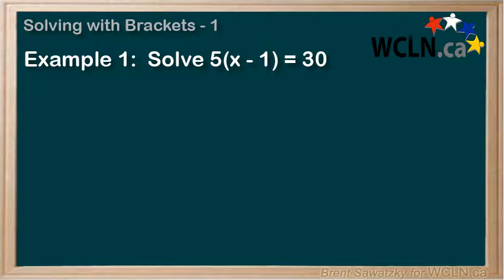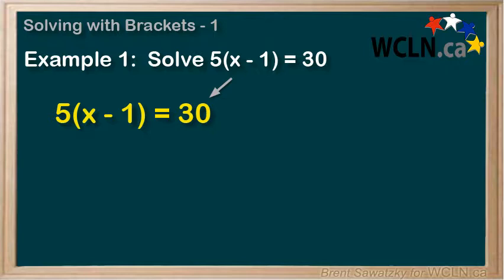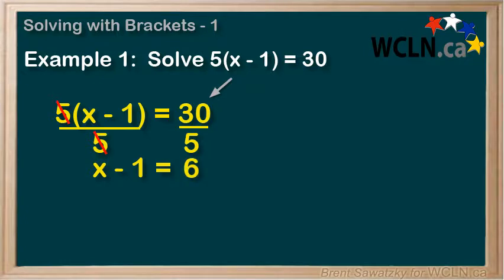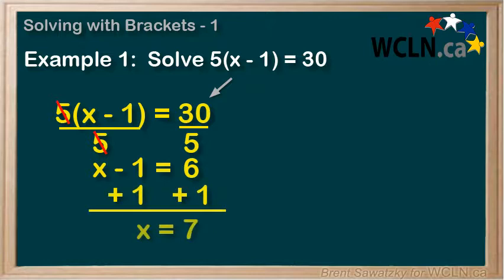Our first goal should be to get rid of the brackets, and there are a couple of ways to approach this. Method 1: we can see that we're multiplying the whole left side by 5. The opposite of multiplying by 5 is dividing by 5, so we divide both sides by 5. The 5s cancel out on the left, and on the right 30 divided by 5 is 6. So now we're left with x minus 1 equals 6. We add 1 to both sides and we're left with x equals 7.